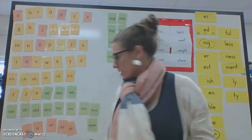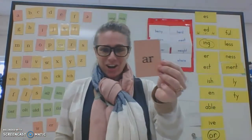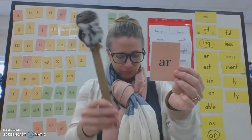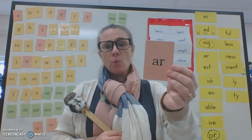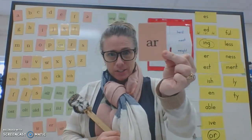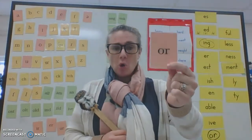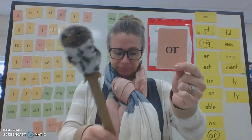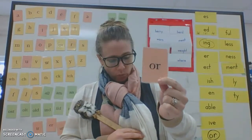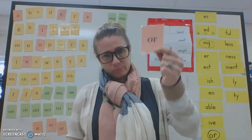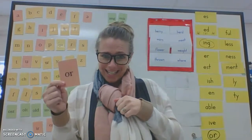And of course, let's practice them like this. A-R: car, er. A-R: beggar, er. A-R: warm, or. Three sounds for this little sucker. Two sounds for this one. O-R: horn, or. O-R: doctor, er. O-R: worm, er. Right? One syllable word after a W. Two syllable word at the end, it says er.